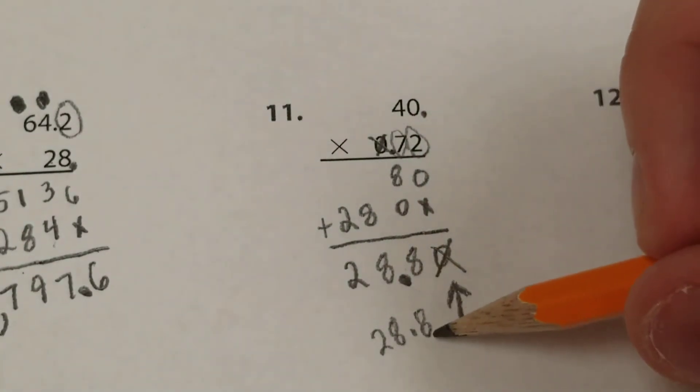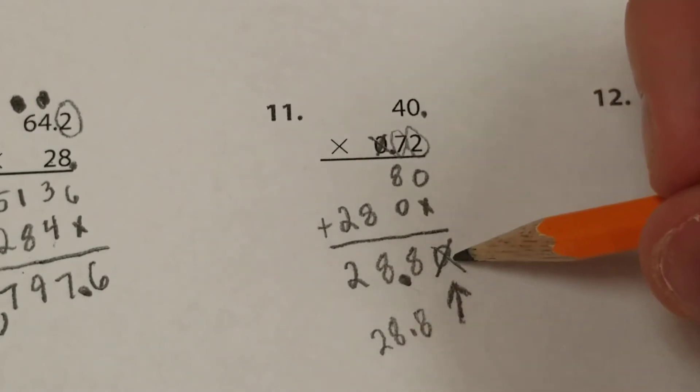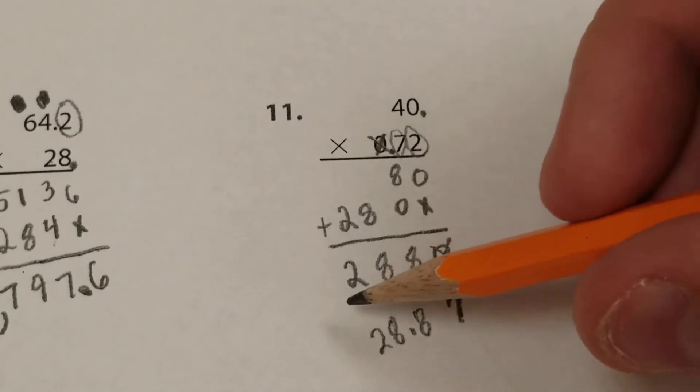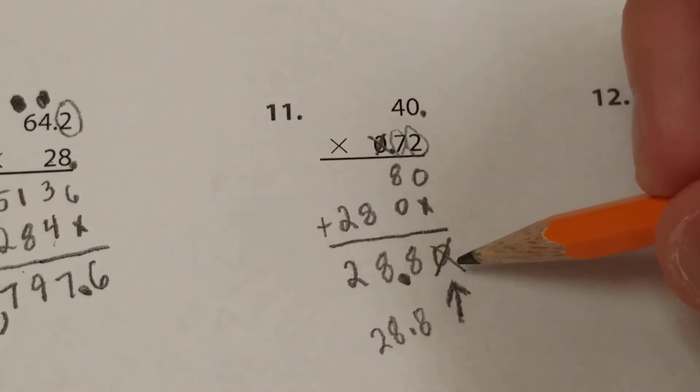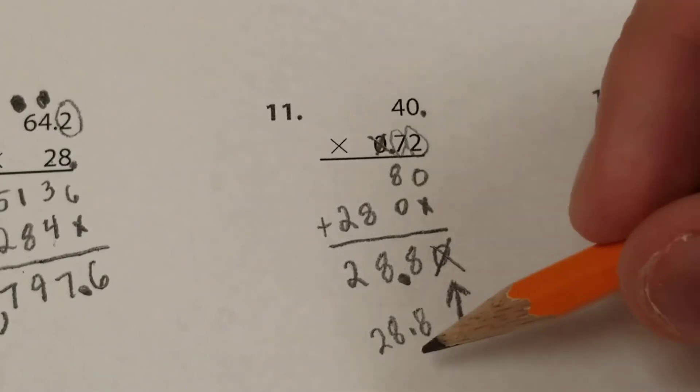I know some of you might ask, well, do I need to move it over again because I got rid of the 0? No, that 0 was your placeholder. Really, your answer is 28 and 80 hundredths. You can simplify 80 hundredths to 8 tenths. So the decimal stays in the same spot then.